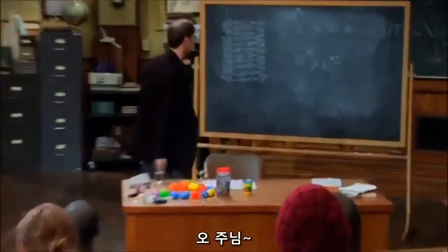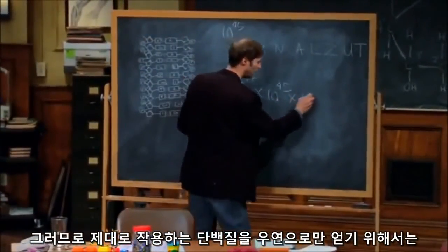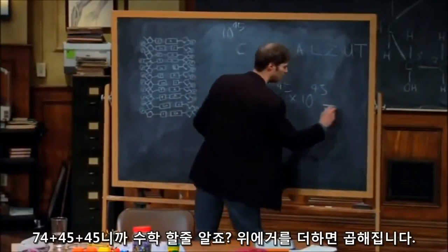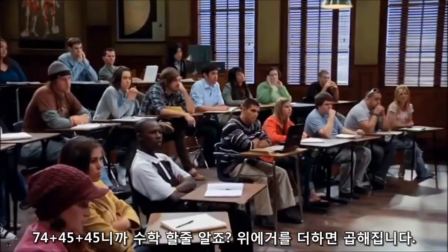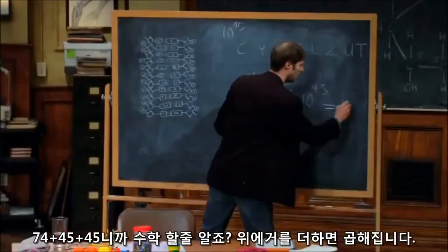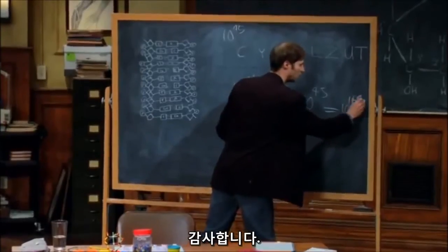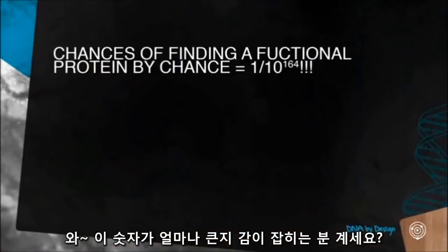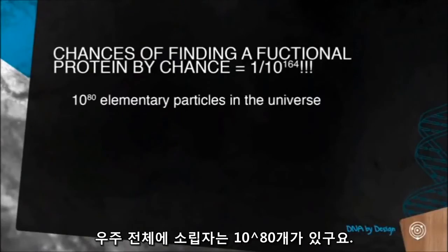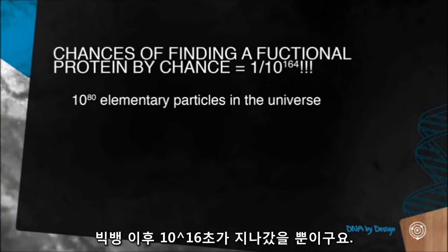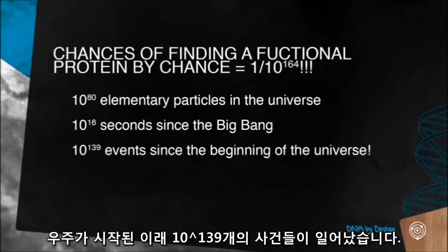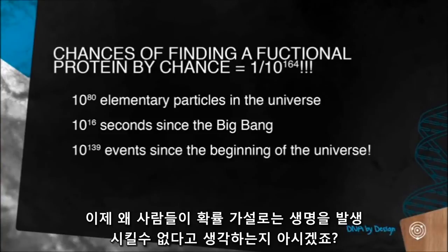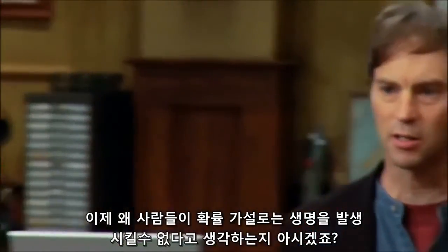So the odds of building even a short functional protein by chance alone: 74 plus 45 plus 45 — you add exponents when multiplying exponential numbers — equals 10 to the 164th power. There are only 10 to the 80th elementary particles in the entire universe, only 10 to the 16th seconds since the Big Bang, and only 10 to the 139th total events since the beginning of the universe. Now you're starting to understand why people are very skeptical that the chance hypothesis is going to do the job.